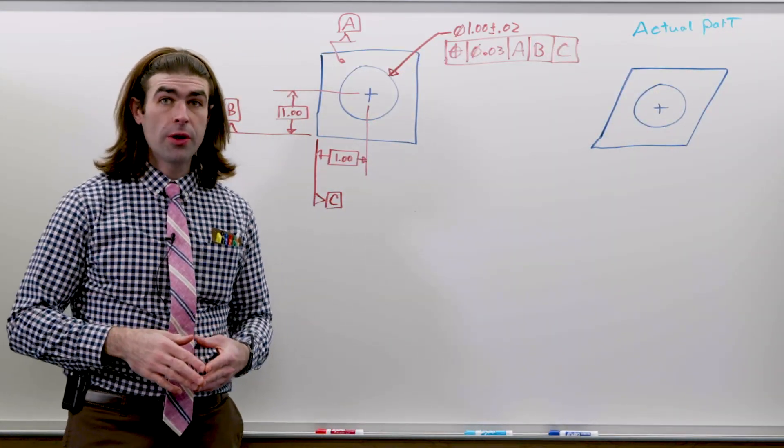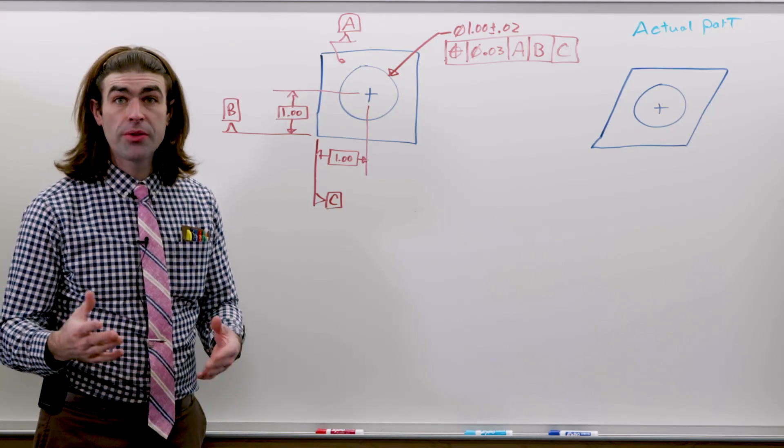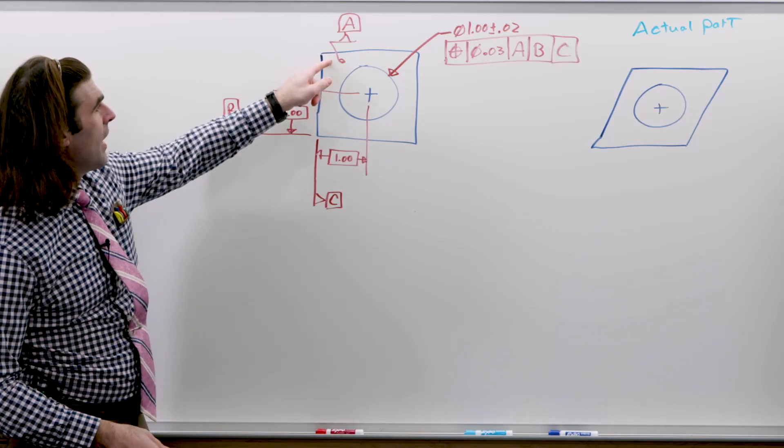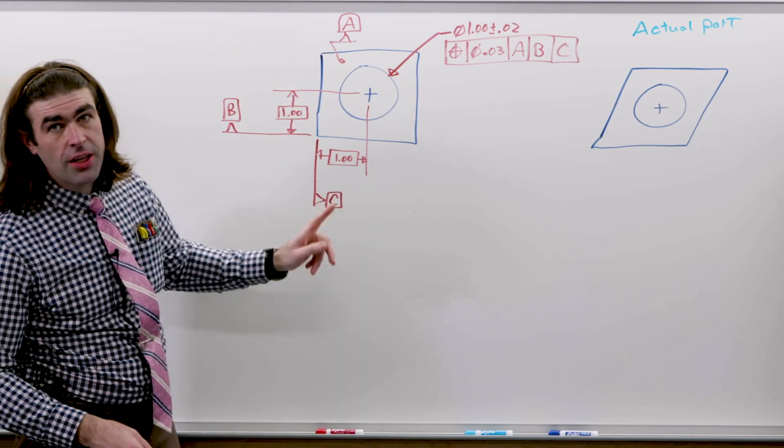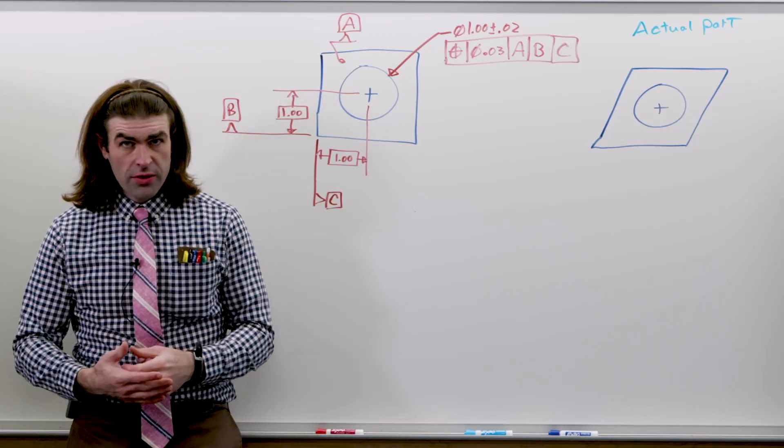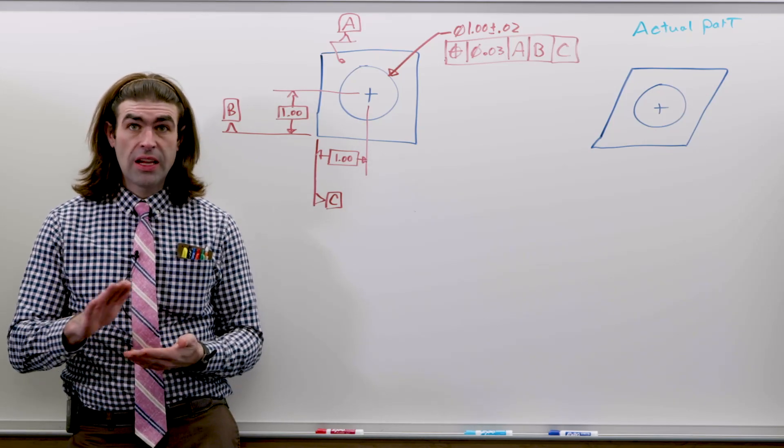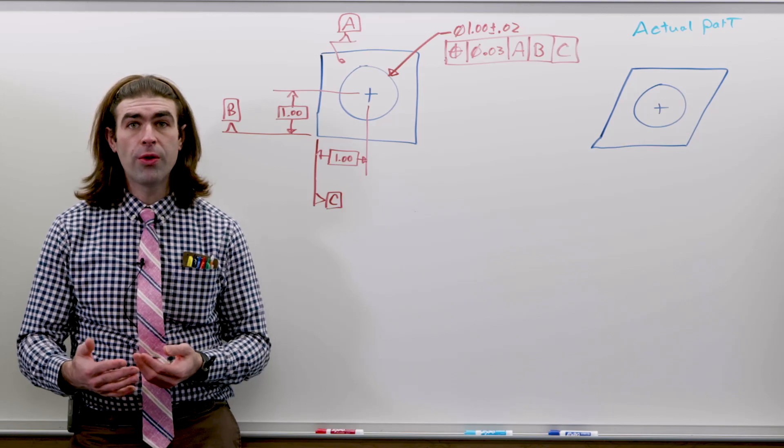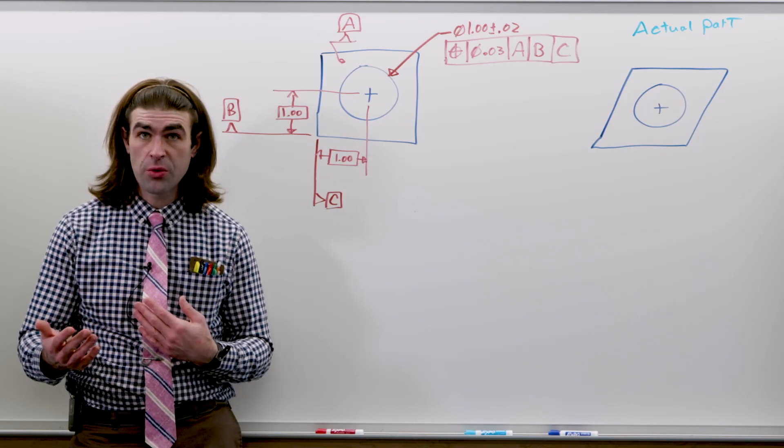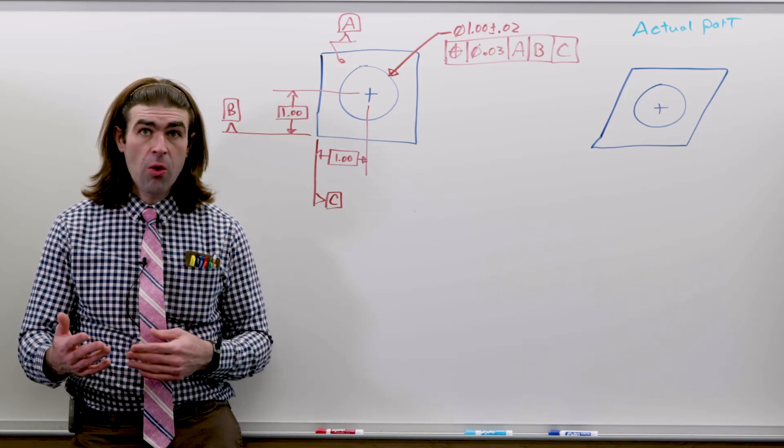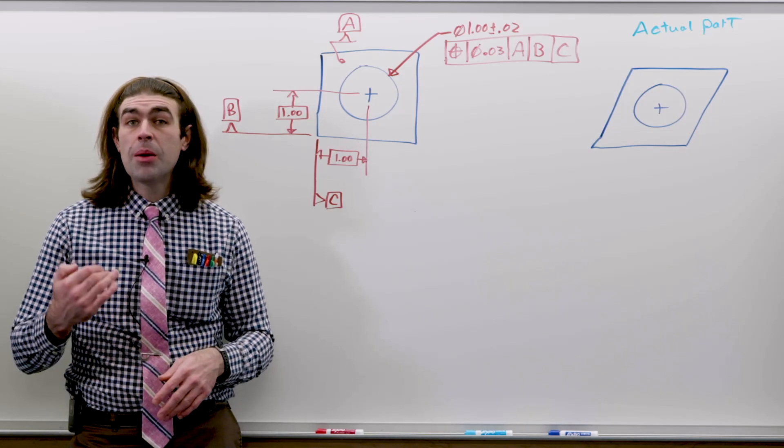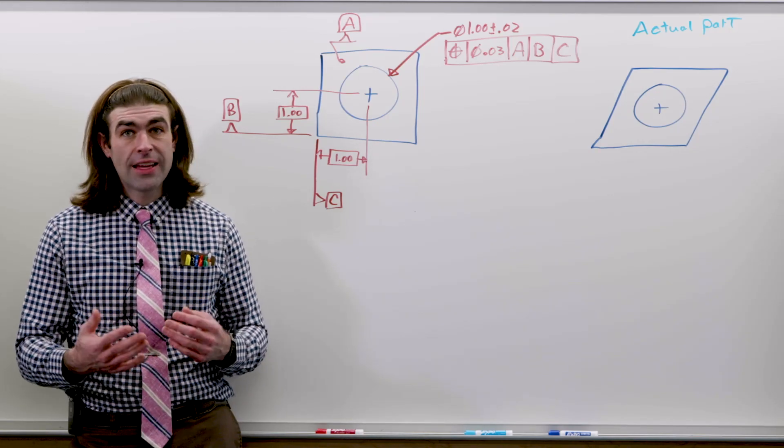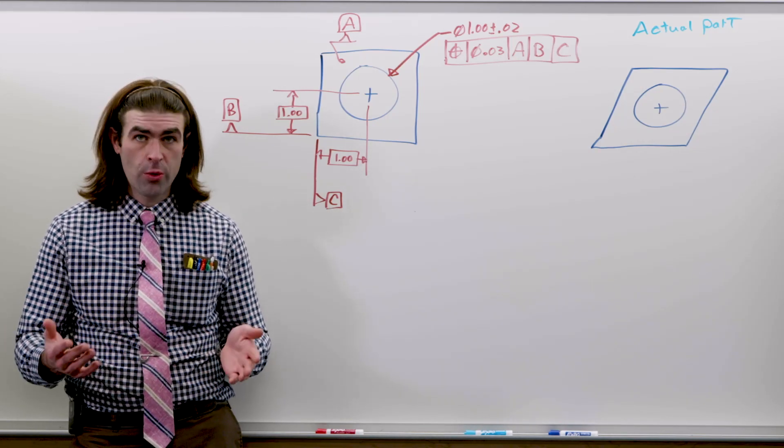So I've drawn a figure on the board. It's just a typical example for a position tolerance. We've got this hole positioned to datum A, B, and C. So the way this works is that the position to datum A just controls the perpendicularity of the hole to datum A. It has nothing to do really with the location of the hole aside from the perpendicularity. B and C control the location of the hole in what we could think of as the X and Y coordinates.